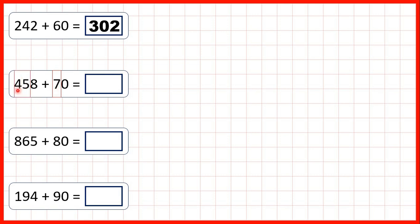So instead, we can work out 45 plus 7, which is 52. So our answer is 528, because 45 plus 7 is 52, and the 8 ones stays the same because we're not adding any ones.